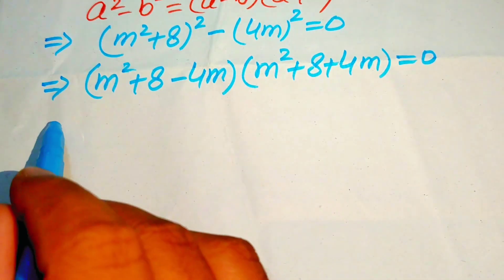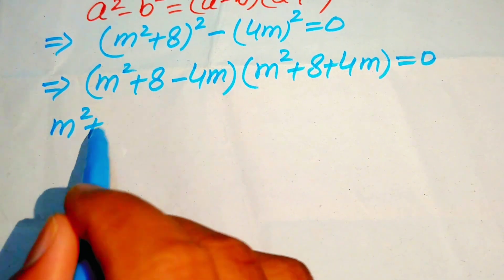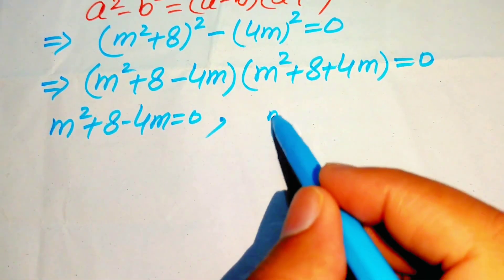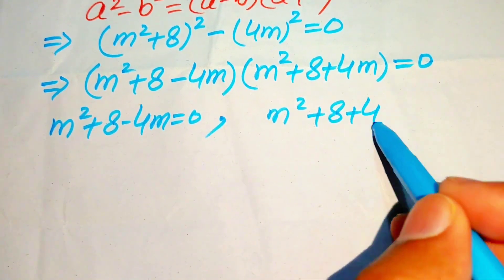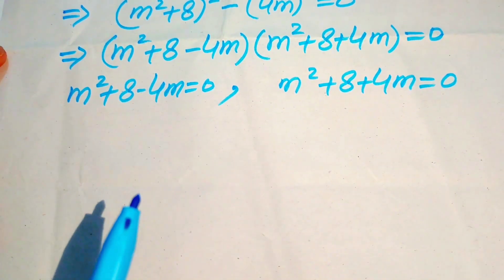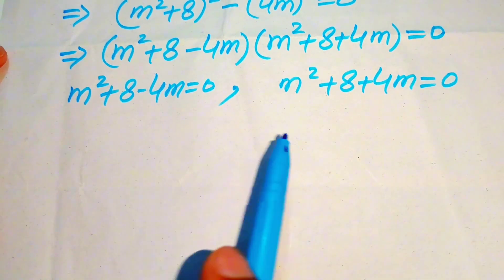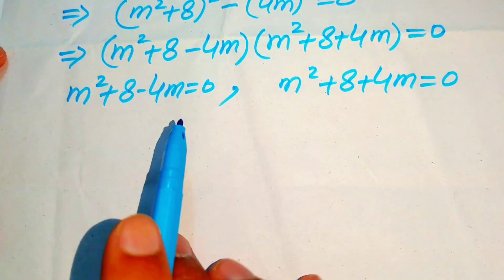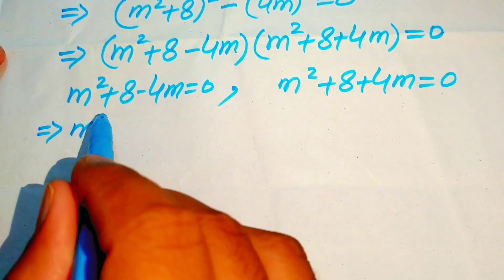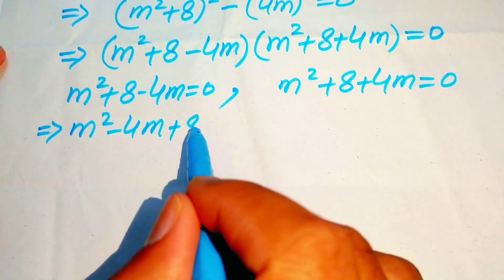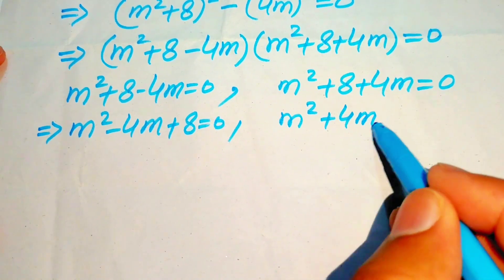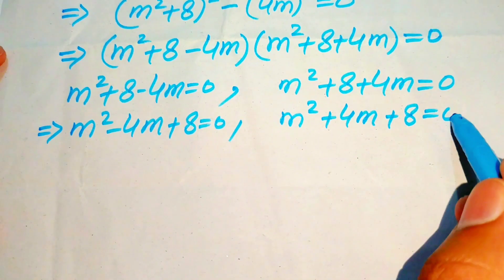Case one: m squared plus 8 minus 4m equals 0, and case two: m squared plus 8 plus 4m equals 0. We need to solve these two quadratic equations to find the value of m. Rewriting: m squared minus 4m plus 8 equals 0, and m squared plus 4m plus 8 equals 0.